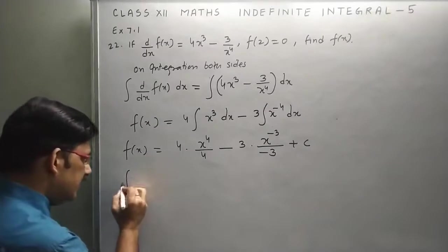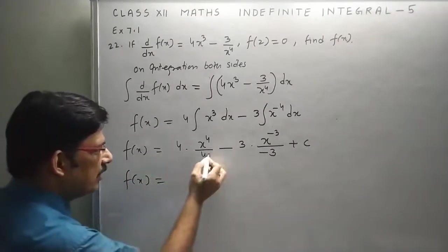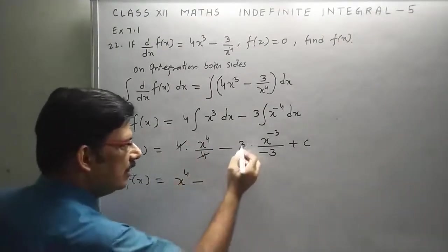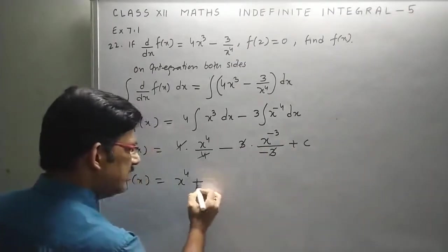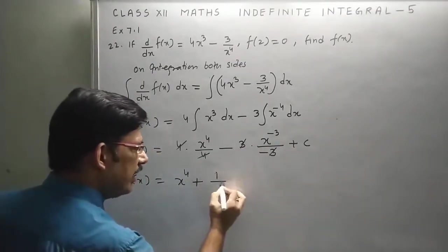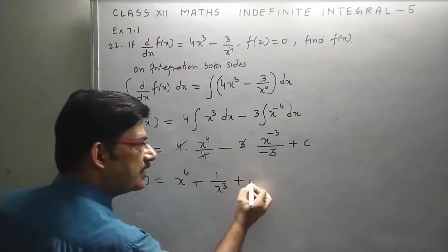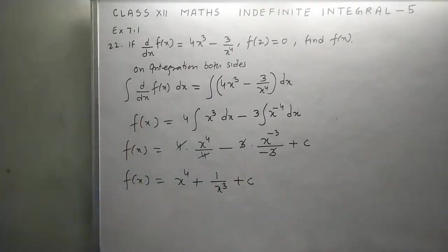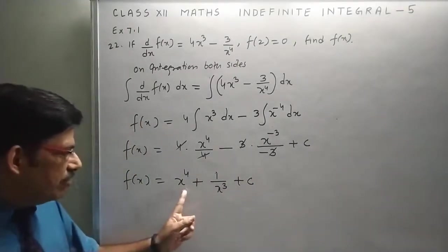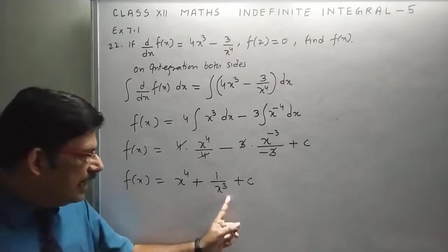Now, f(x) is equal to, you can cancel 4 with 4, giving x⁴. The 3 cancels, minus minus plus, and you can write 1 upon x³ plus c. So, function f(x) is equal to x⁴ plus 1 upon x³ plus c.